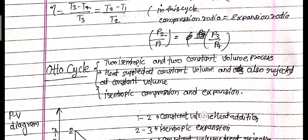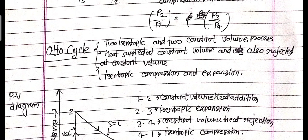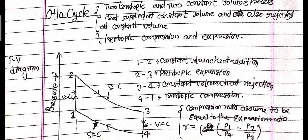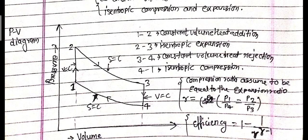The Otto cycle works on the principle of constant volume heat addition. Two isentropic and two constant volume processes occur. Heat is supplied and rejected at constant volume. As shown in the PV diagram: process 1 to 2 is constant volume heat addition, process 2 to 3 is isentropic expansion, process 3 to 4 is constant volume heat rejection.